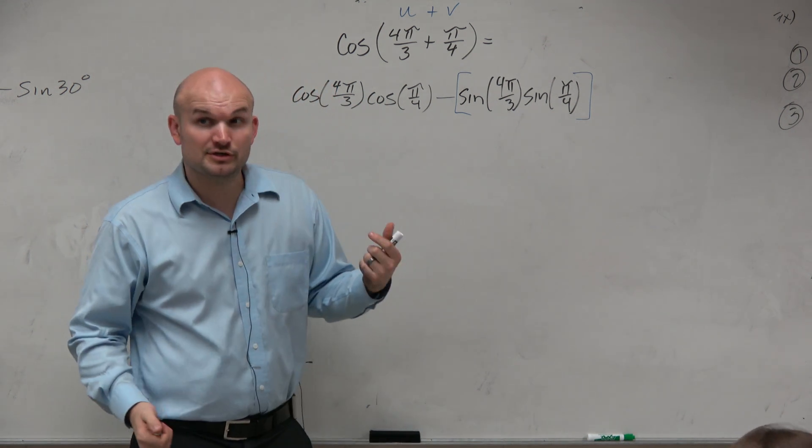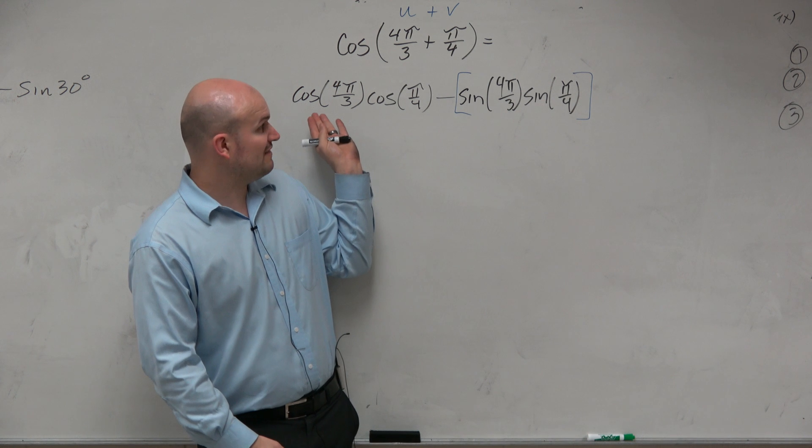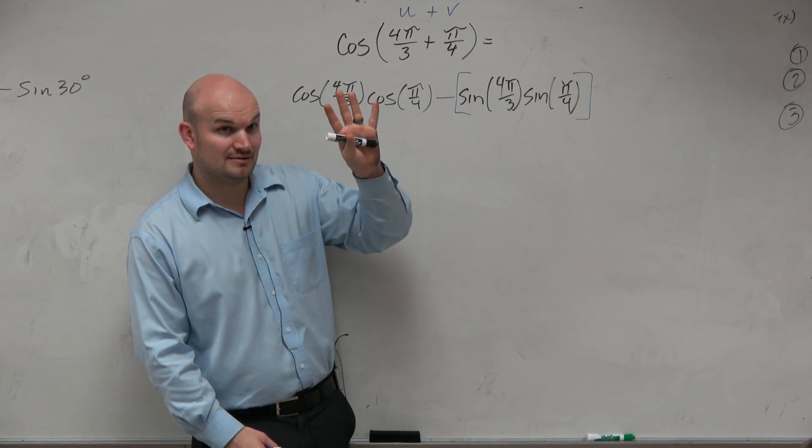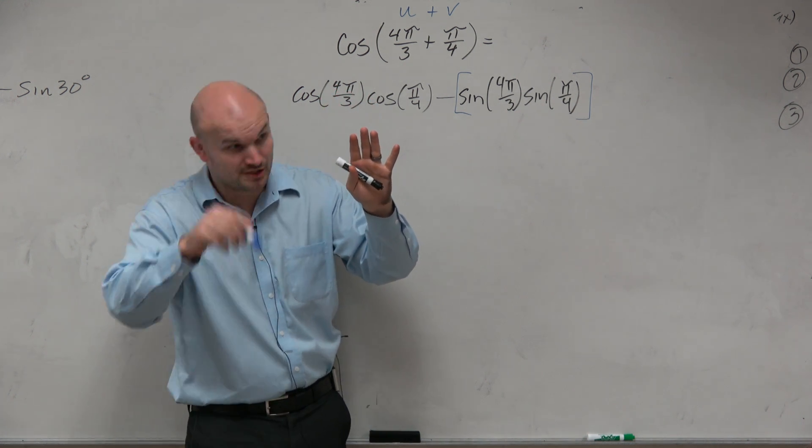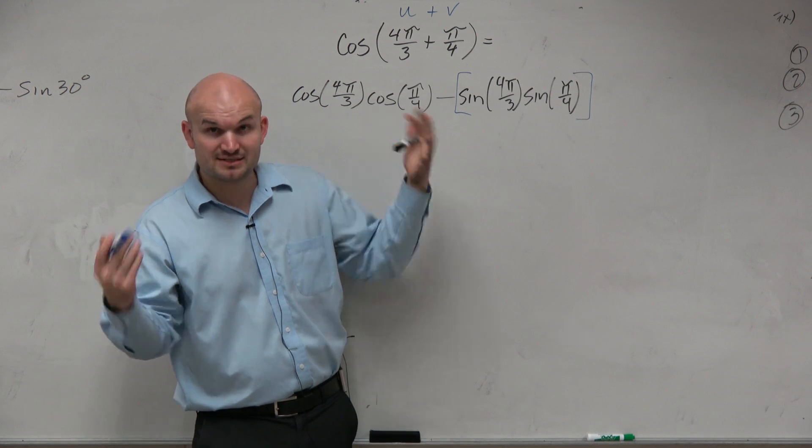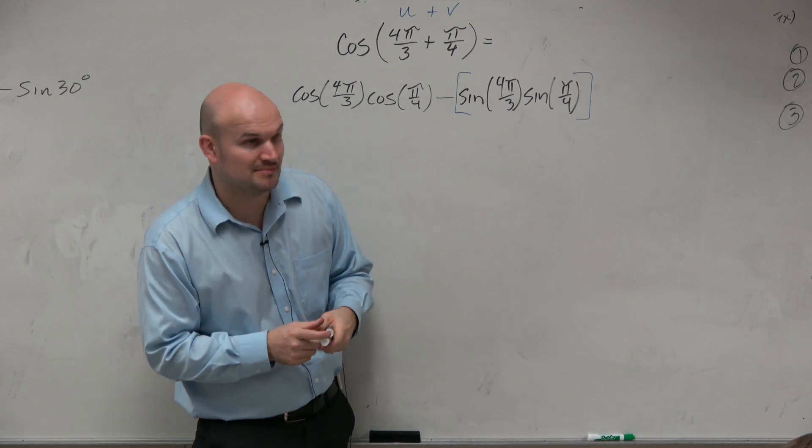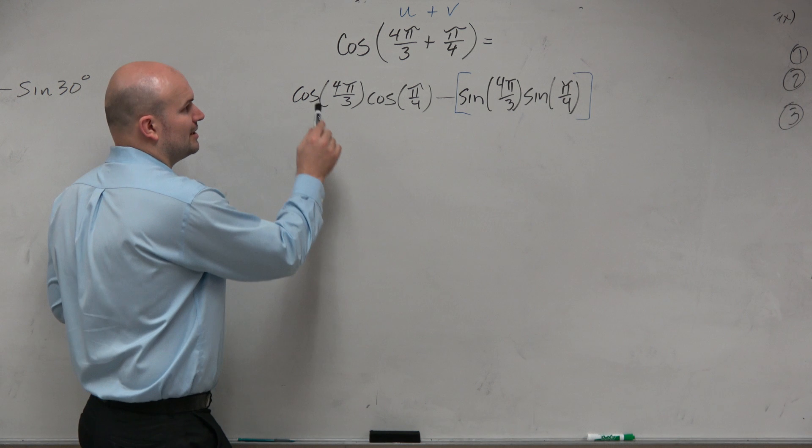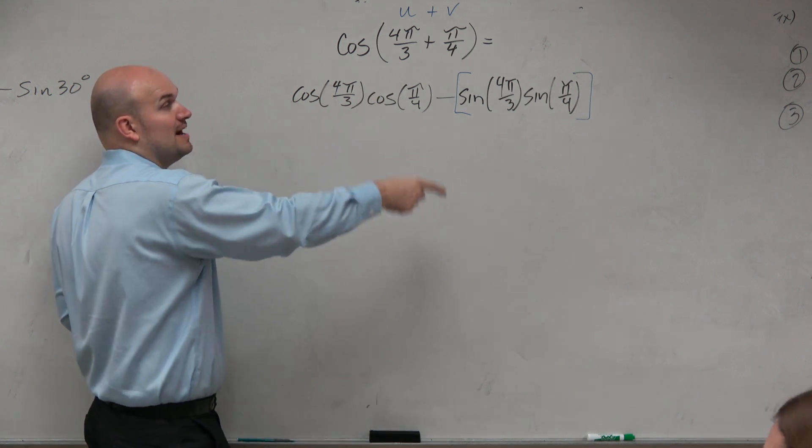Now, again, you're knowing your unit circle, guys. Look how many times we're evaluating the unit circle. Four times, right? So if you're spending your time drawing the unit circle and taking forever to do it, it's going to take you a really long time to do these problems. Cosine of 4π/3, let's think about that.